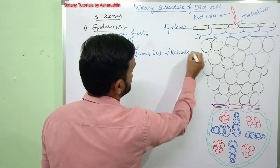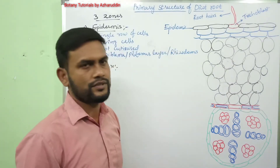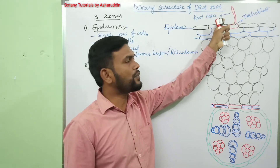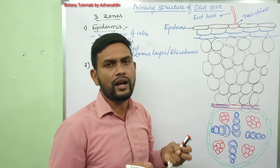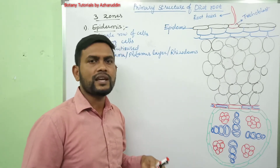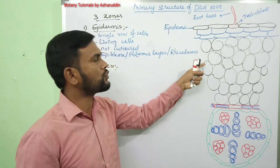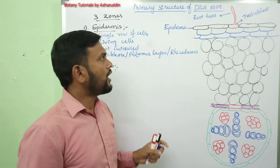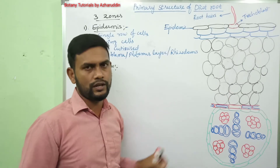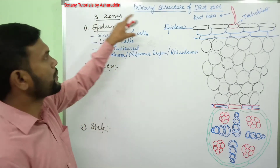Epidermis is also known as the piliferous layer and is also called rhizodermis. These names are given for the epidermis due to the presence of root hairs. This epidermis absorbs water and mineral salts from the soil — it absorbs capillary water and transports it to the cortex. Along with that, this epidermis gives protection to the inner tissues.